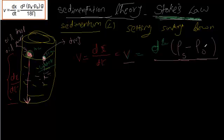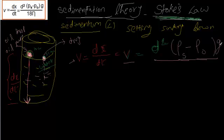Any particle thrown into the air will eventually settle to the ground because of gravitational force. Assuming the beaker is on Earth, this particle is affected by gravitational force. So the rate at which the particle sediments is also directly proportional to the gravitational force.